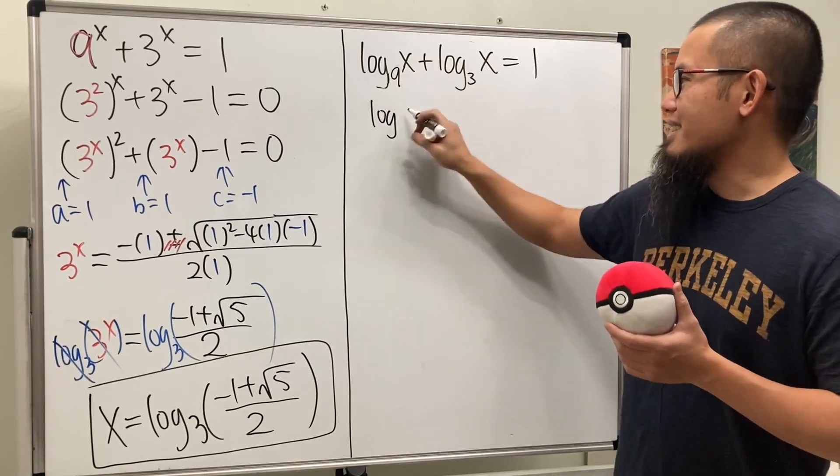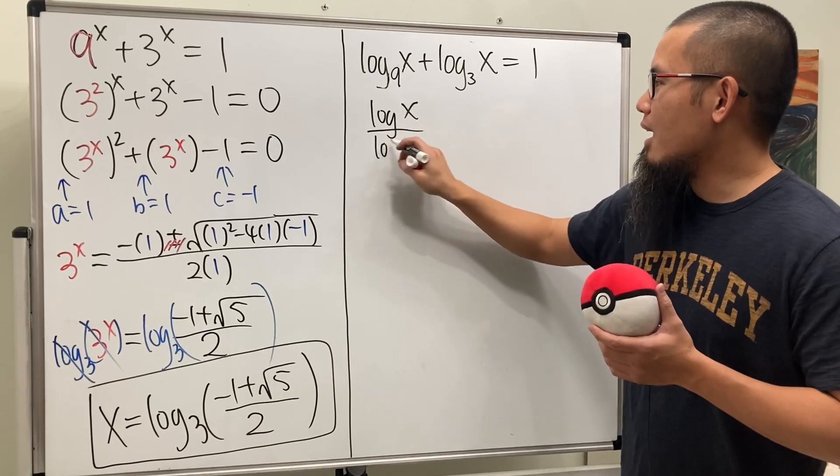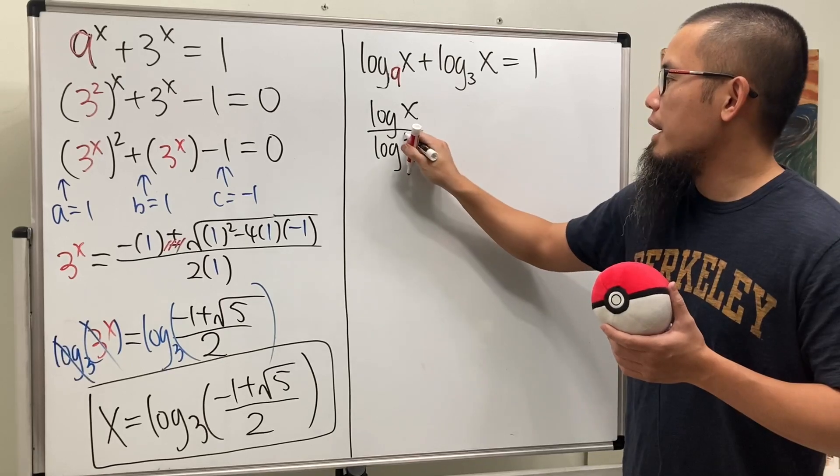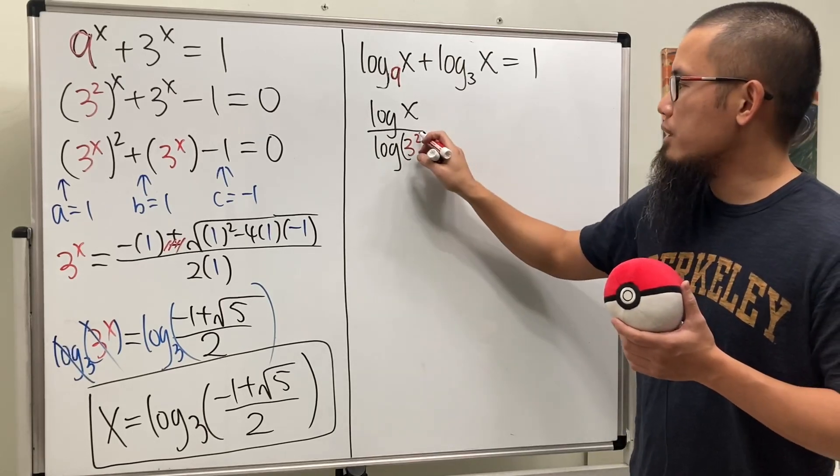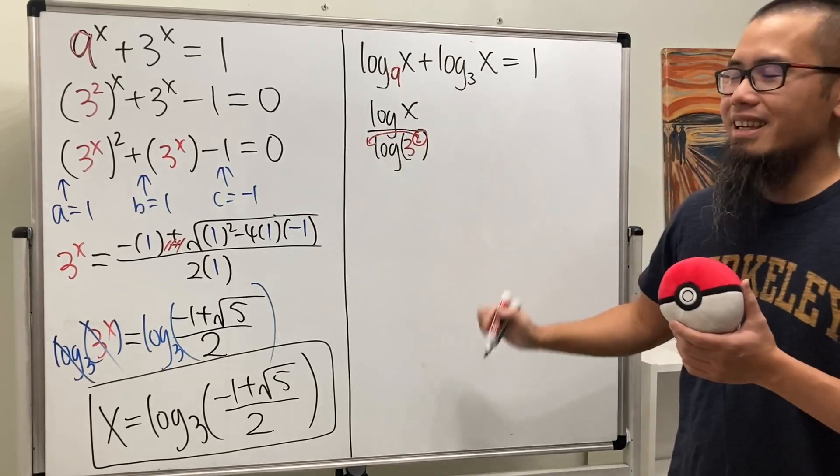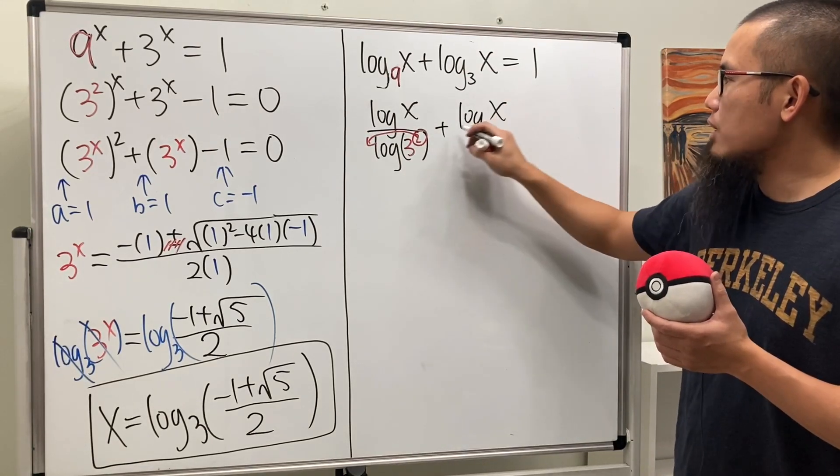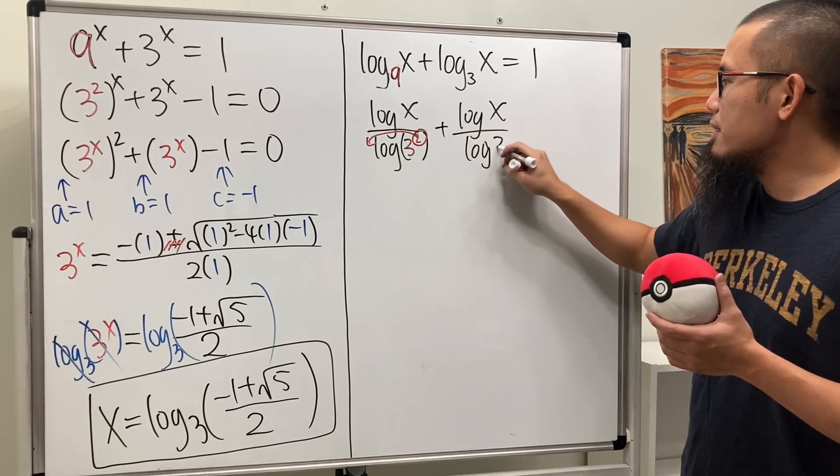Let's go ahead and rewrite it as log base 10 of x over log of 9. But we saw that earlier - 9 is the same as 3 squared, and the beauty of this is that we can bring the 2 to the front.